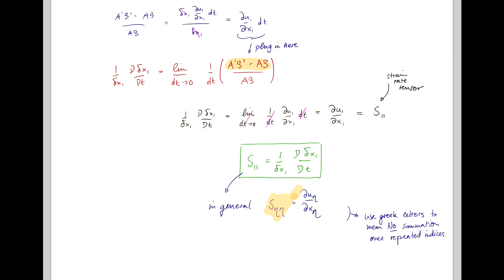So these are the diagonal terms of our strain rate tensor, and they represent the linear strain rates.